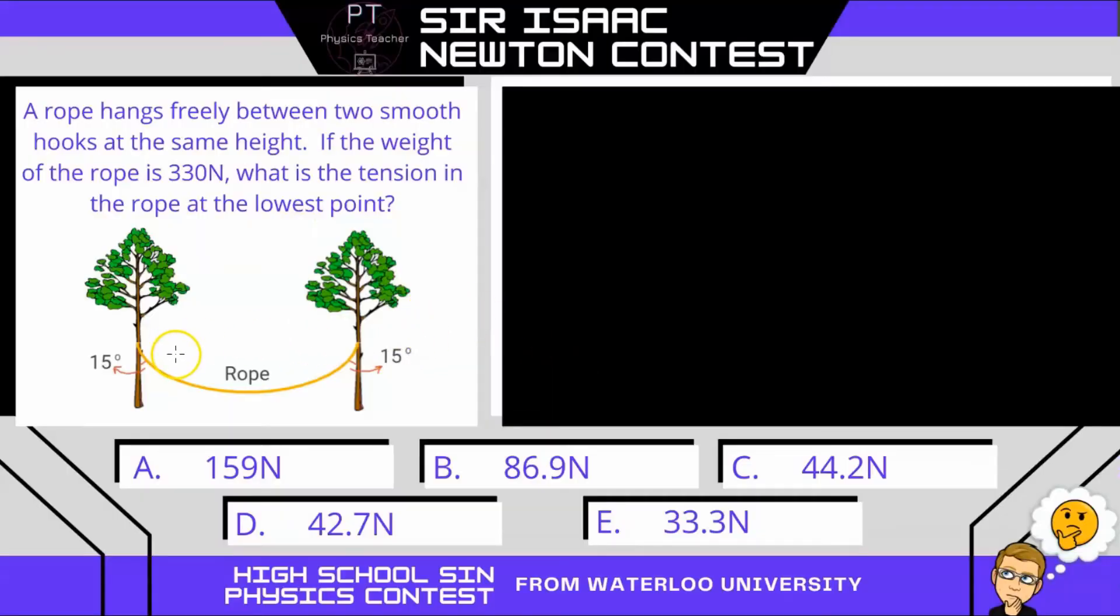So in this question, we have a rope that's hanging freely between two trees at the same height. And in this question, the rope has a weight, it's not massless, the weight is 330 newtons. And it makes an angle of 15 degrees with each tree. So there's some symmetry here, which can really help us with the problem.